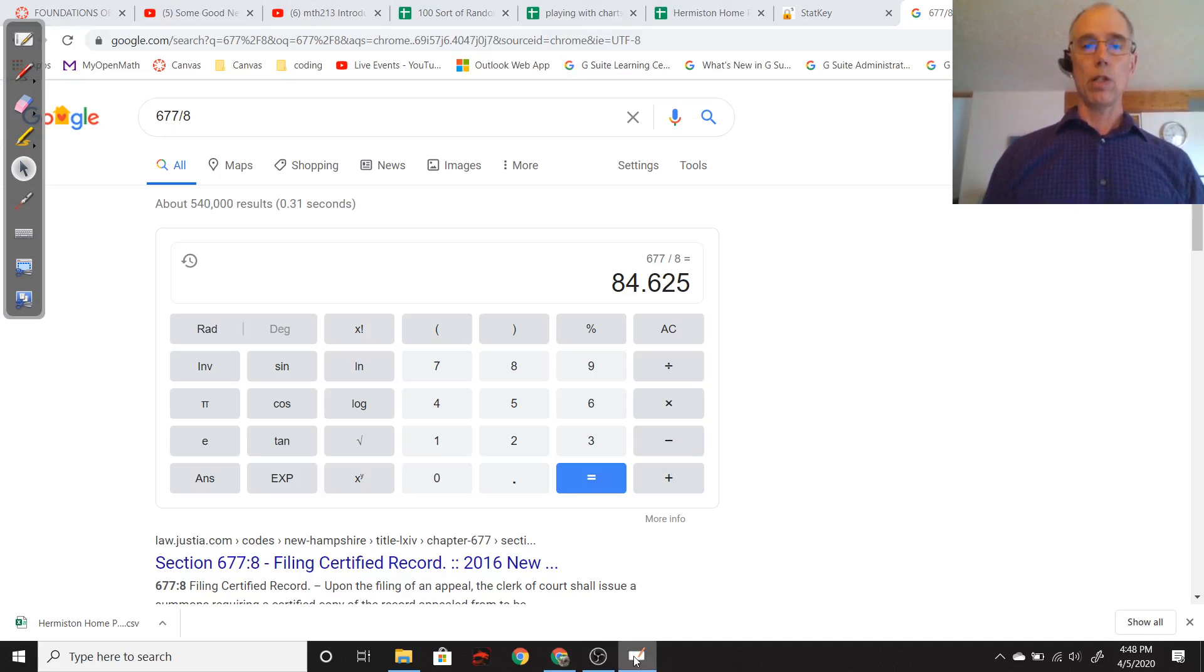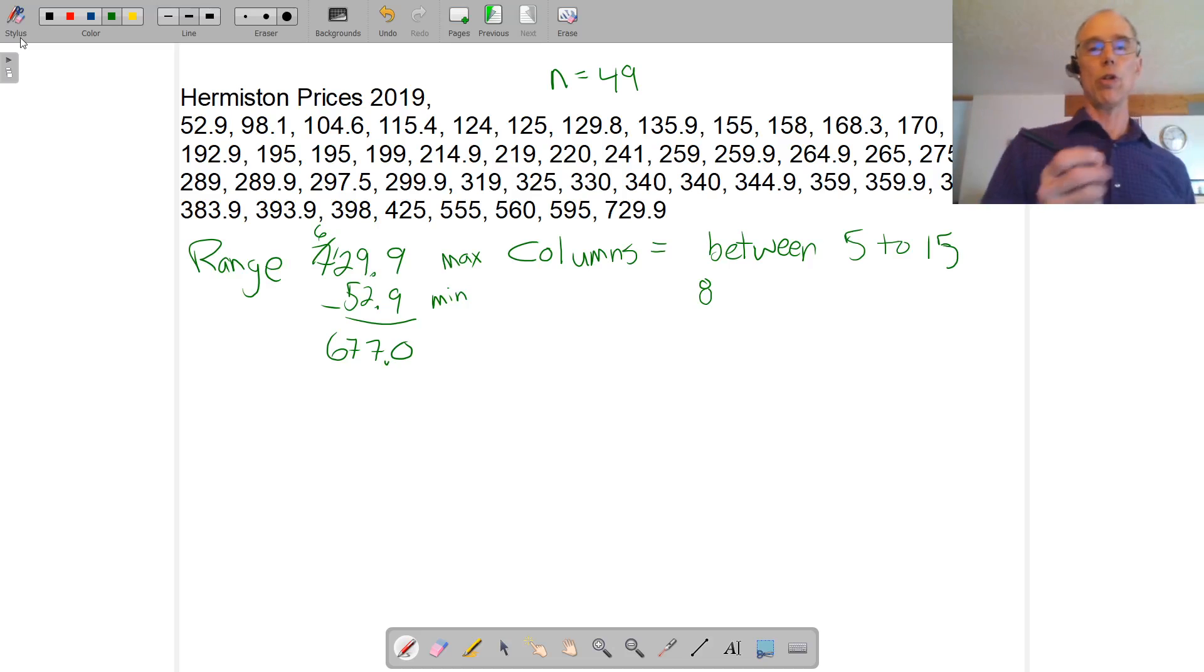So let's say then for our groups, we're going to go with the width. So I was trying to estimate the width. So estimate width of each column. And usually what I do is I take the range of values and I divide by the number of columns that I want. And so that was 677 divided by 8. That gave me about 84, which I'm going to round up to 100.